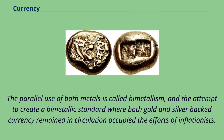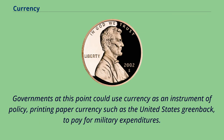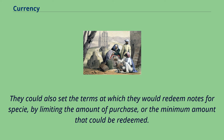The parallel use of both metals is called bimetallism, and the attempt to create a bimetallic standard where both gold and silver-backed currency remained in circulation occupied the efforts of inflationists. Governments at this point could use currency as an instrument of policy, printing paper currency such as the United States greenback to pay for military expenditures. They could also set the terms at which they would redeem notes for specie, by limiting the amount of purchase or the minimum amount that could be redeemed.